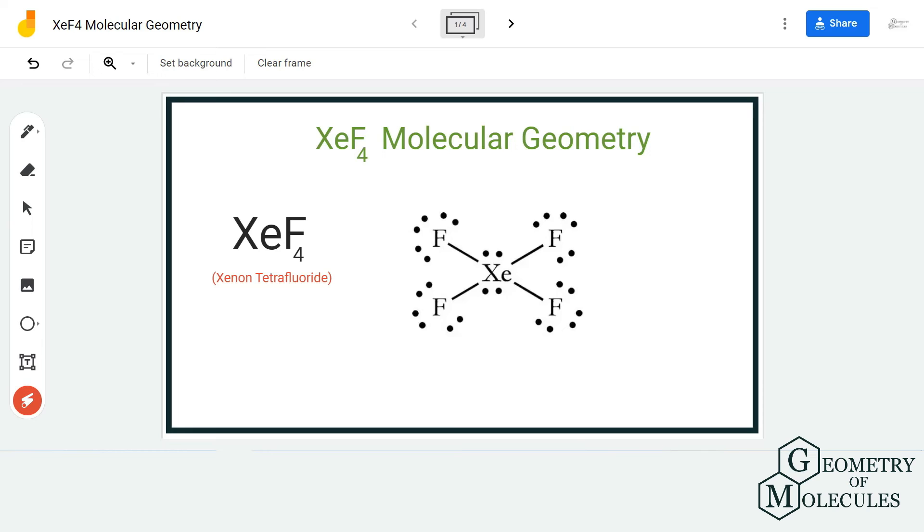Hi guys, welcome back to our channel. In today's video, we are going to help you determine the molecular geometry of XeF4. It is the chemical formula for xenon tetrafluoride. To understand its molecular geometry, we are first going to look at the Lewis structure.